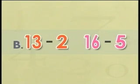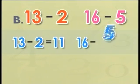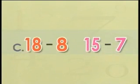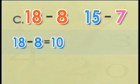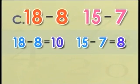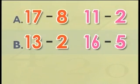Now let's check B and C. In B, 13 minus 2 is 11, and 16 minus 5 is also 11. So the number pairs in B also give the same difference. What about C? In C, the difference between 18 and 8 is 10, and the difference between 15 and 7 is 8. This means the number pairs in C give different answers.